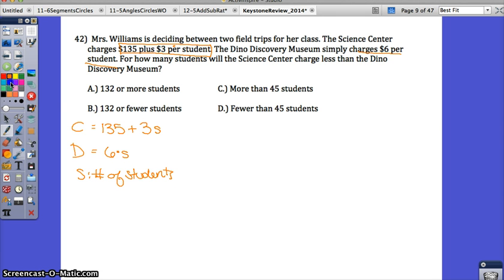Okay, I want to know for how many students will the Science Center be less than the Dino. So I want to know when the center is going to be less than the Dino. Well, once you take that, just substitute in for each side. The Science Center, how much does that cost? Well, the Science Center charges $135 plus $3s. I want to know when this will be less than the Dino, which is 6s.